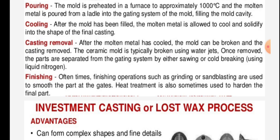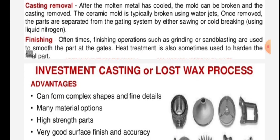After the molten metal has cooled, the mould can be broken and the casting removed. The ceramic mould is typically broken using water jets. Once removed, the parts are separated from the gating system by either sawing or cold breaking using liquid nitrogen.